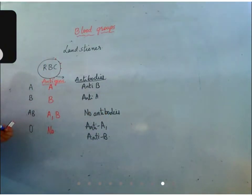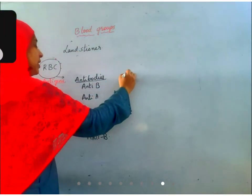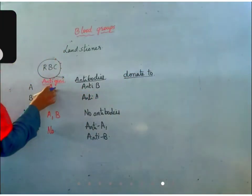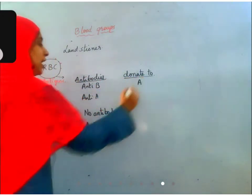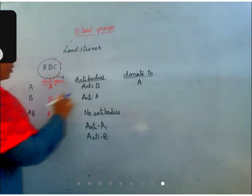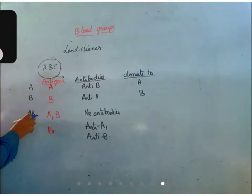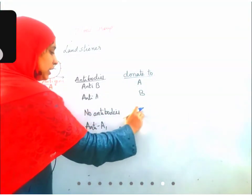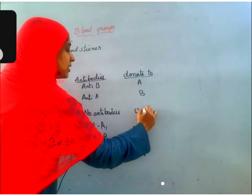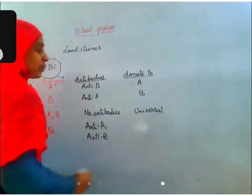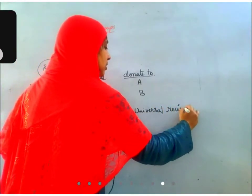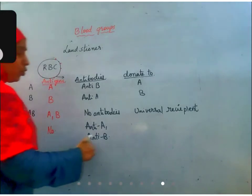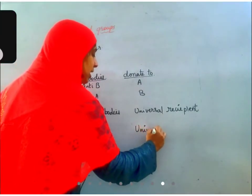Who can take this blood? A blood group can donate blood to A blood group personally. B blood group can donate to B blood group. Since AB has no antibodies, that person can receive blood from anyone — he is a universal recipient. O blood group is considered to be the universal donor.